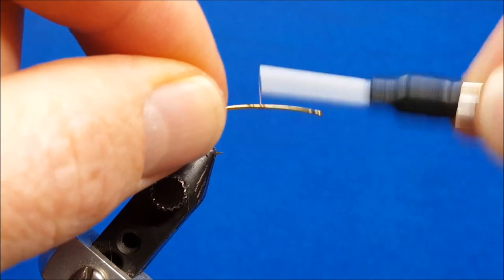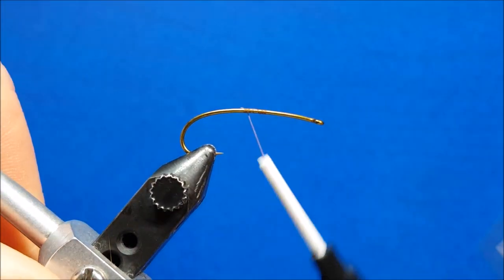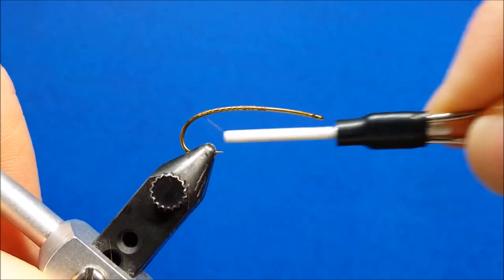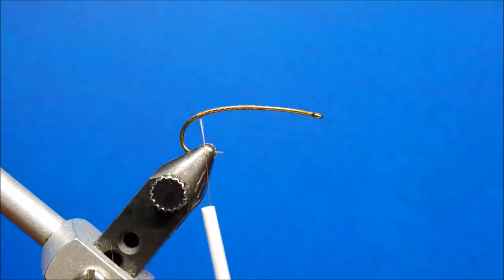Alright, we'll attach the thread to the hook shank here. I'm going to wrap rearward all the way back to the hook band where it starts to bend down. I'm going to pause about there and take just a small drop of Zap-a-Gap and place it right on top of the hook shank.